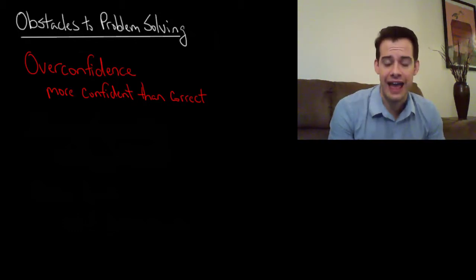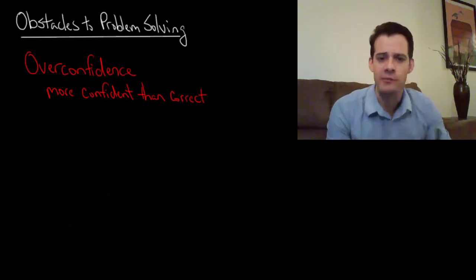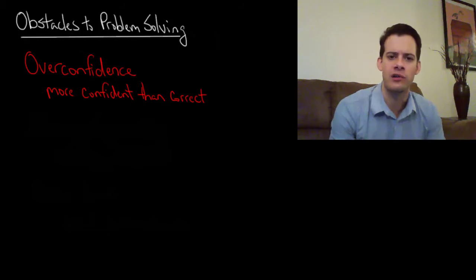One way of demonstrating this is to ask people to spell difficult to spell words and when we do this we see that people are more confident than they are correct. So you ask people to spell difficult to spell words and then you ask them how confident are you in that spelling and you look at the words where people say I'm a hundred percent confident, I know I've spelled that word correctly and they're only correct about 80% of the time.